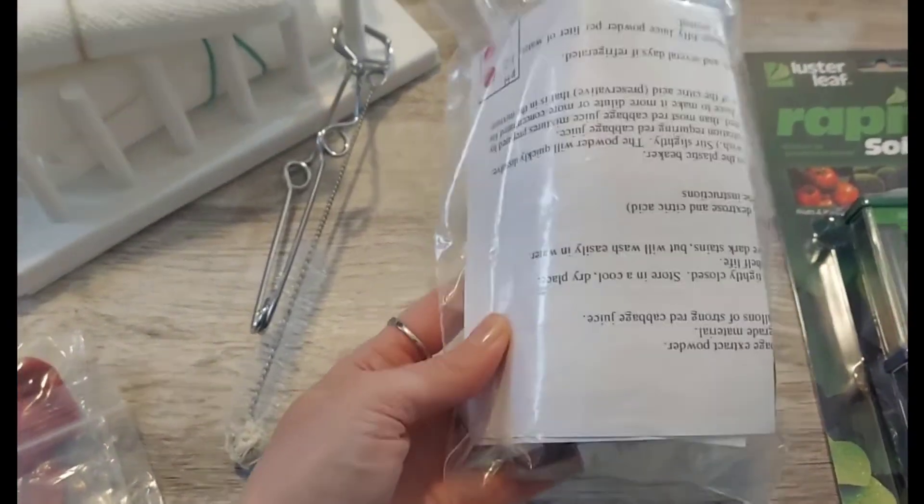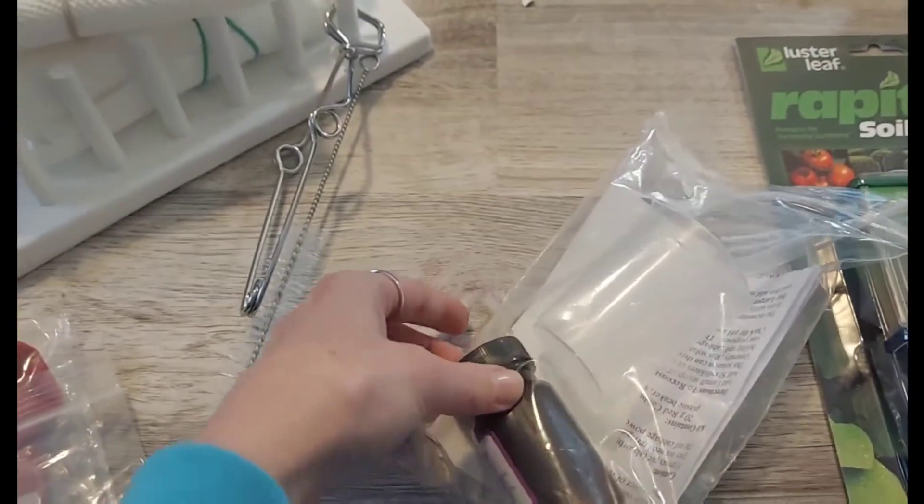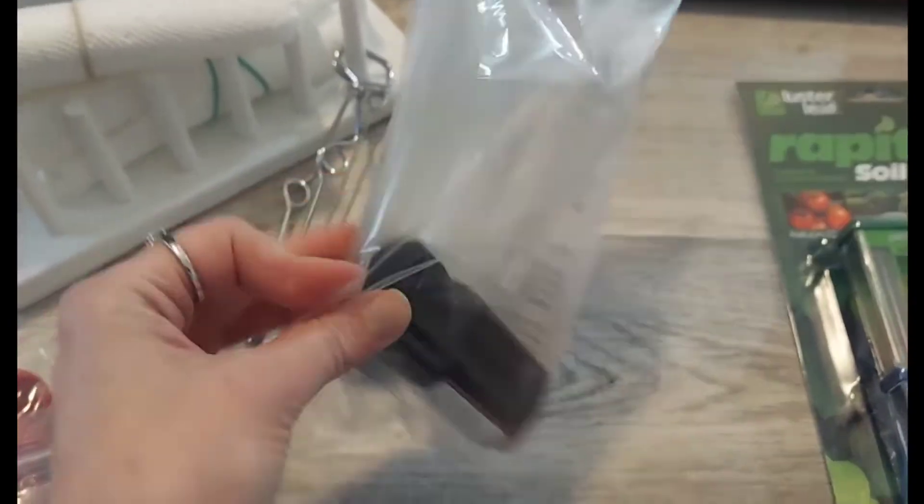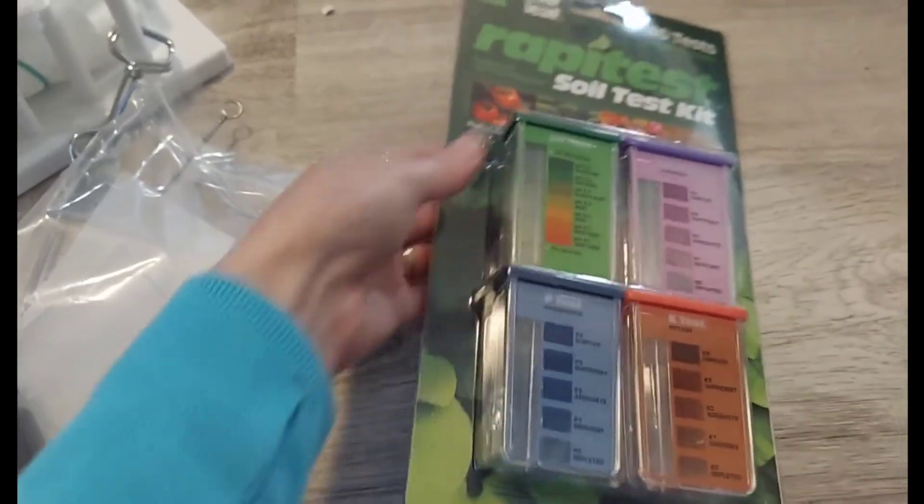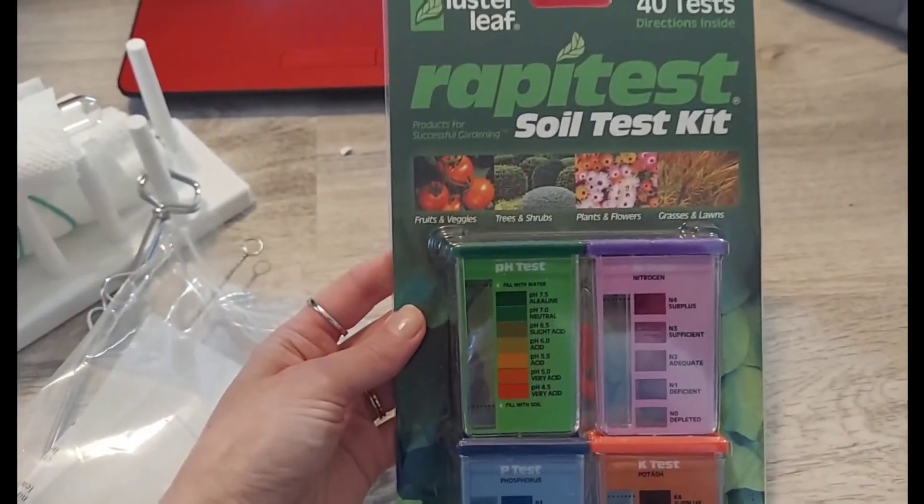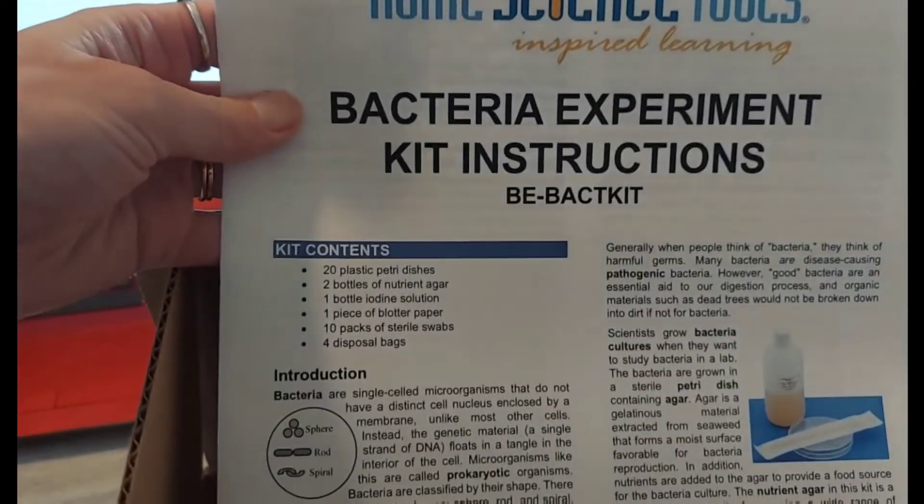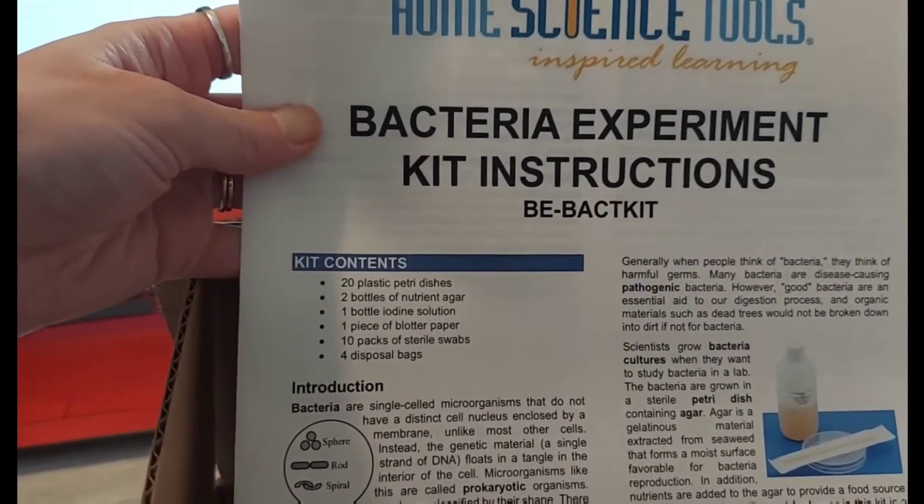These are the stoppers for it. This is another experiment we've done already. This was for the red cabbage pH experiment. I just bought a kit from home science tools. This is also from home science tools. I haven't used it yet. I have one more that I ordered from them. This is the bacteria experiments. We have yet to do this one.